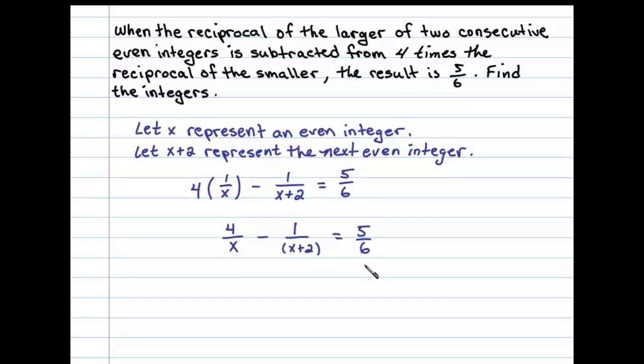Before we do that, let's make a quick note of the restrictions. x cannot equal 0 or -2. Also, we note that the LCD is equal to 6x(x+2), and we'll multiply both sides by that LCD.